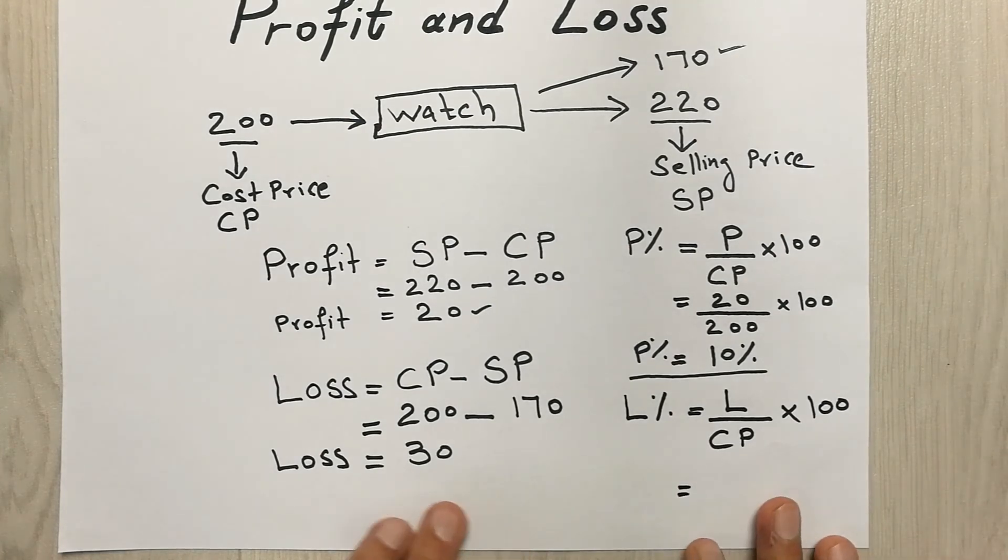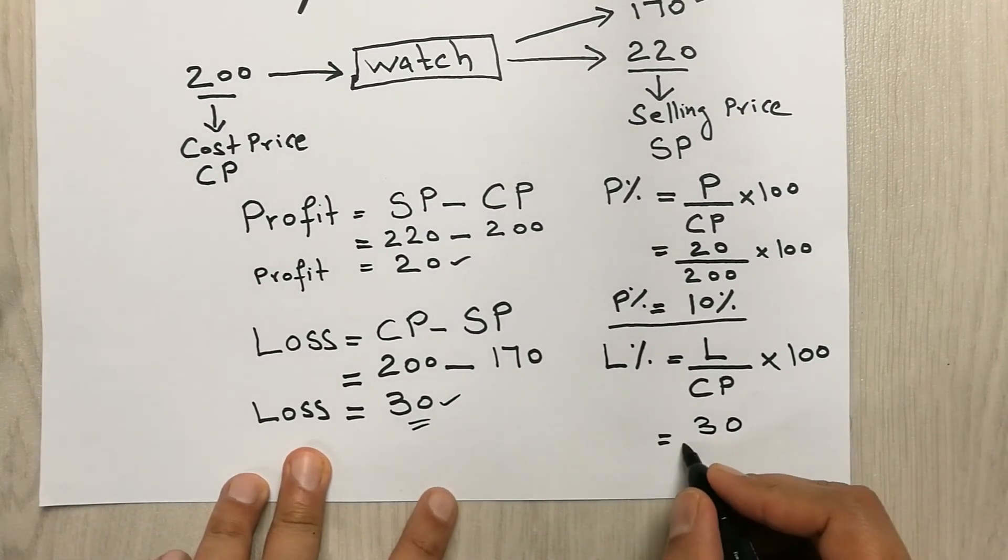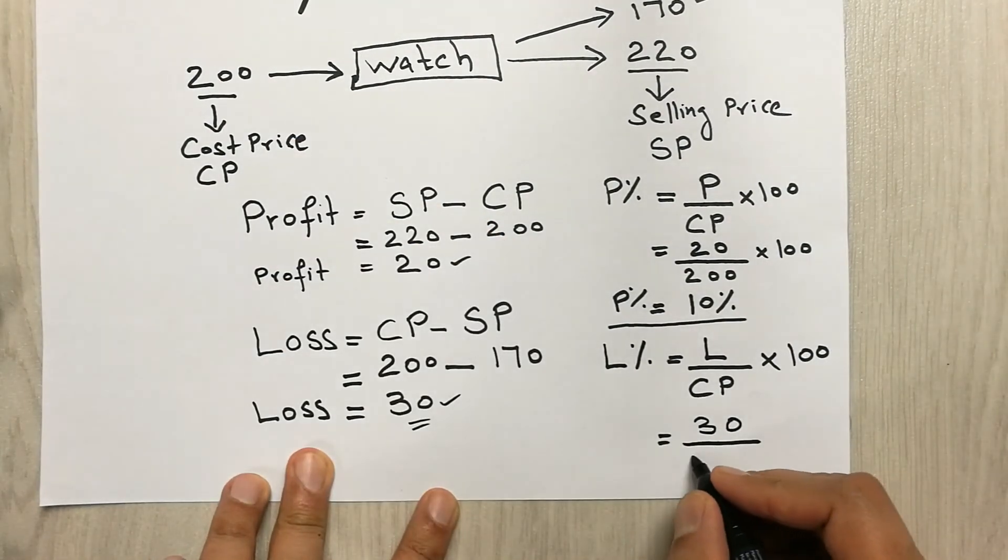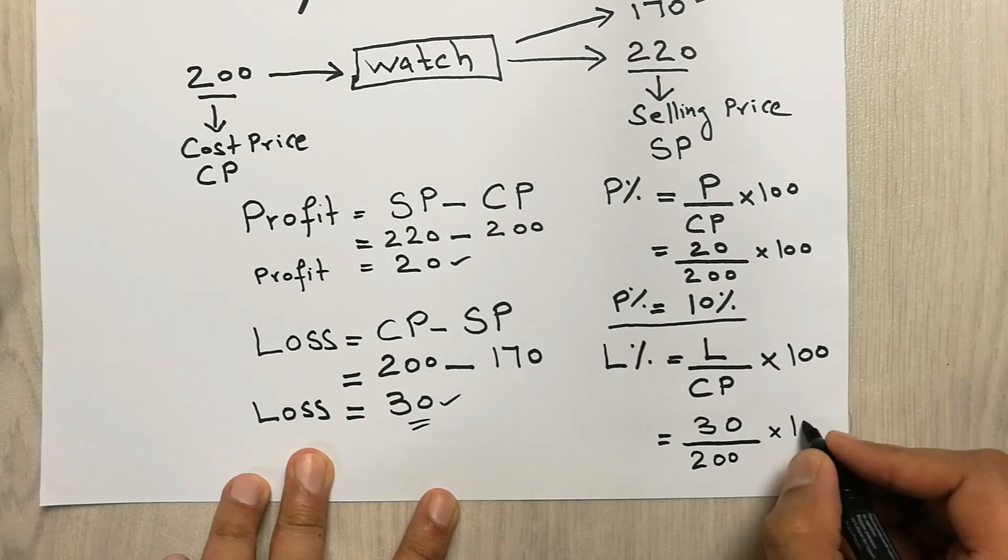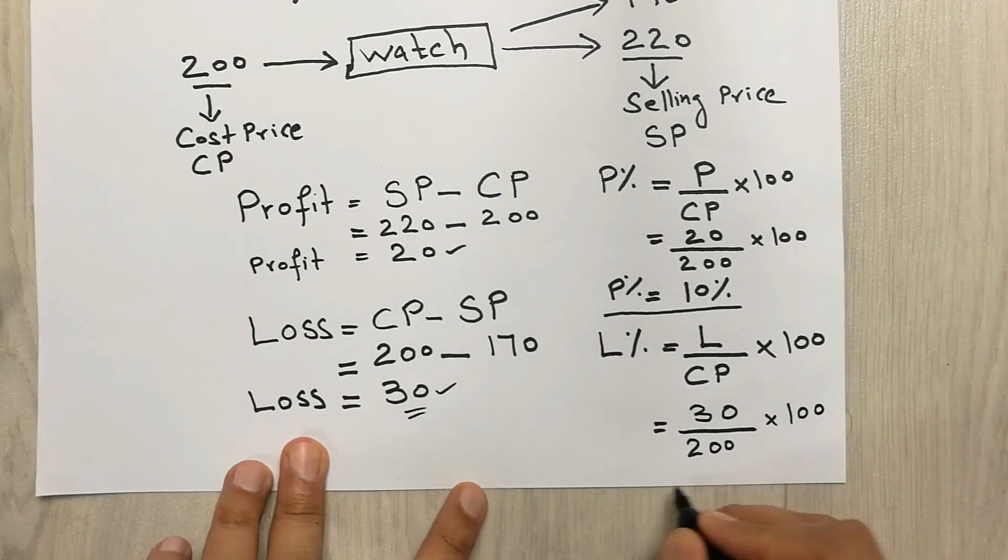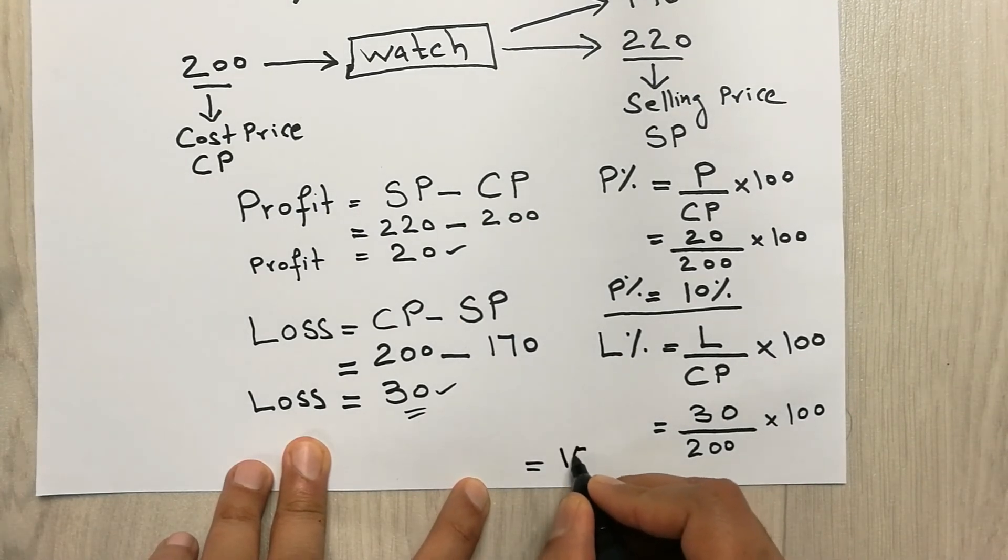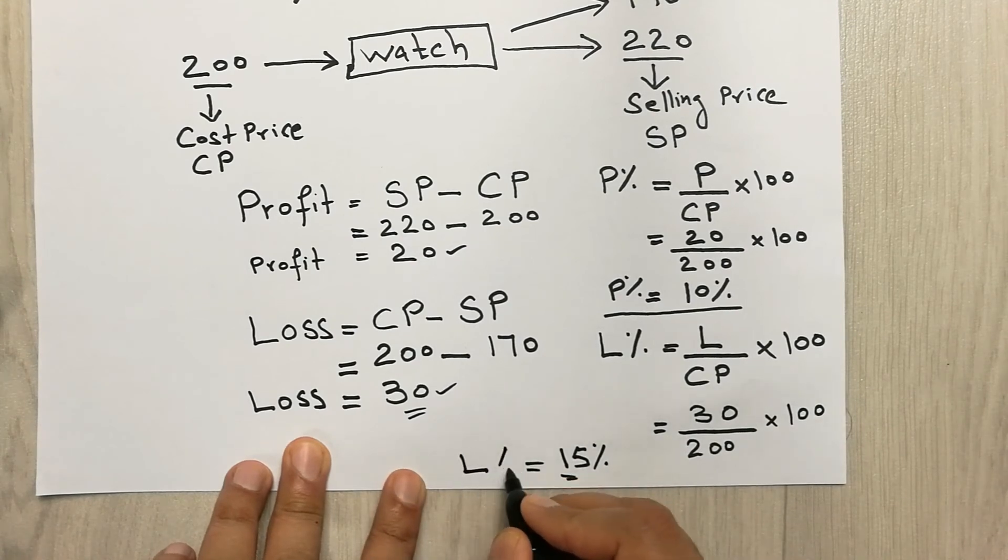So our loss here was 30, so we will put here 30, and then we divide it with cost price. Cost price was 200, and then we multiply it with 100. So our answer will be 15%. So guys, this is our loss percent.